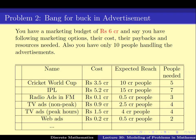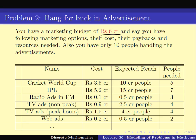Your goal is to spend this 6 crore in such a way that the total expected reach is maximized. You don't want to overspend more than 6 crore, nor can you invest in things for which you will require more than 10 people. For example, you cannot fund both cricket world cup and IPL because 3.5 plus 5.2 crore is way more than your budget of 6 crore, and 5 plus 7 people is more than the 10 people you have. But maybe you can spend on IPL and FM radio ads, because then the total expenditure is less than 6 crore and the total number of people required is just 10.